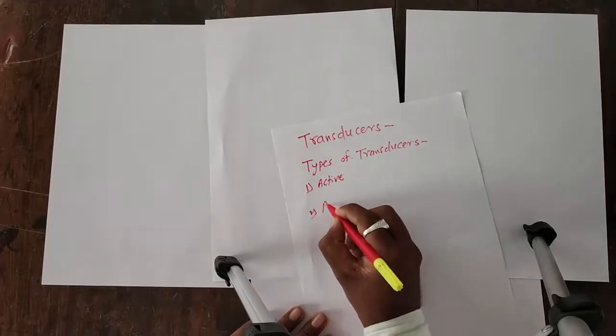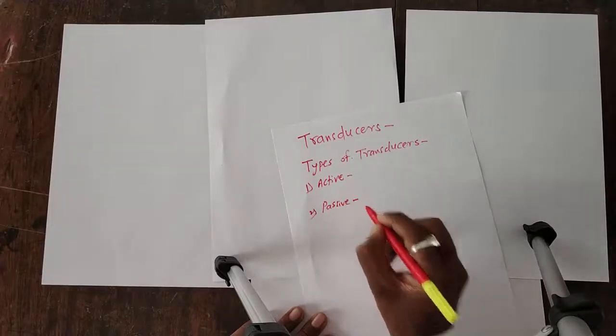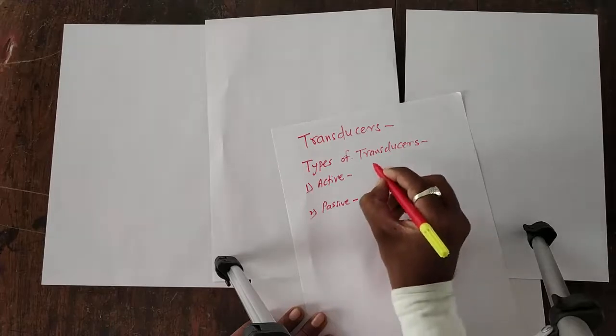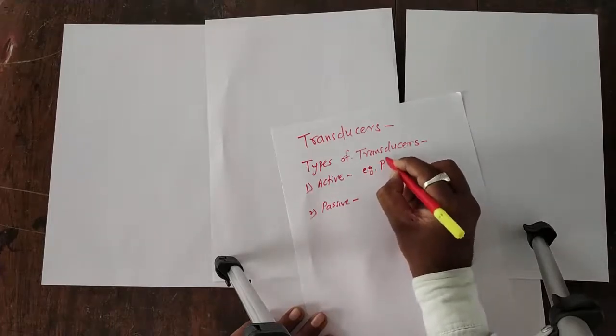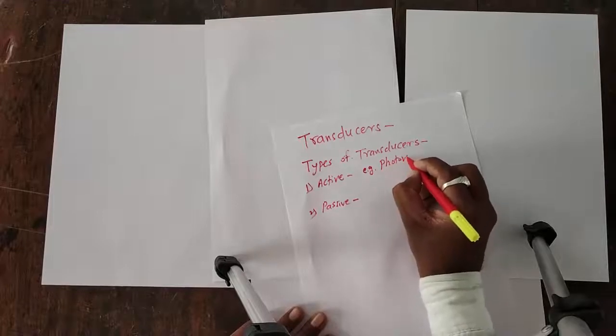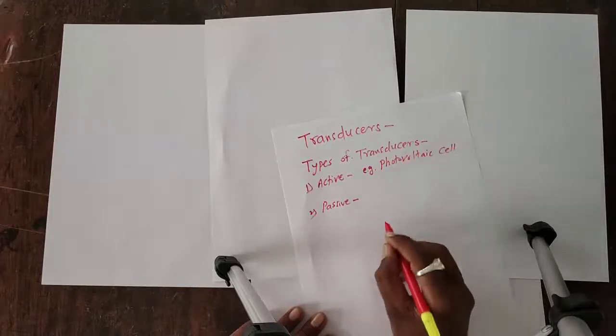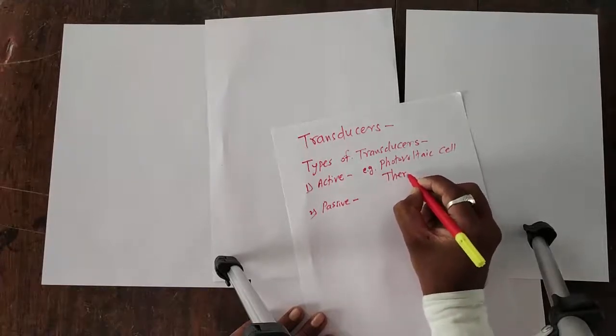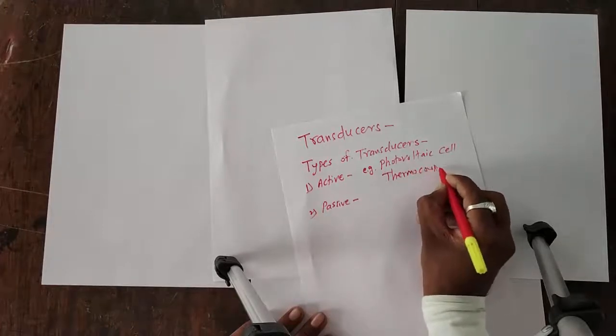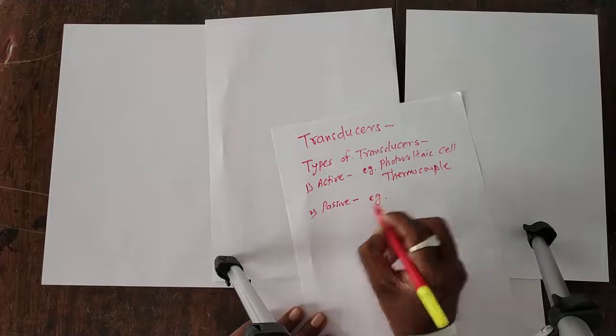Active type transducers are the transducers which run on external energy. Active transducers, for example, the photovoltaic cell, thermocouple, these are the examples of active transducers.